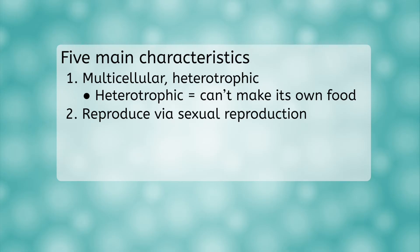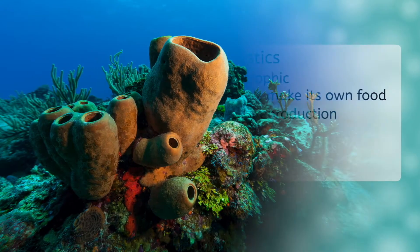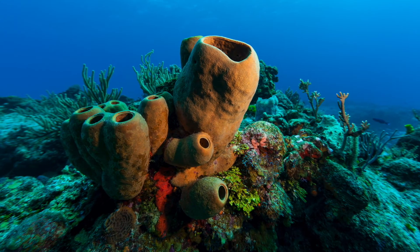Two, animals typically reproduce via sexual reproduction. Three, animal cells do not have cell walls. Four, animals have an internal digestive system. And finally, five, animals have the ability to move. Even if you don't see them moving, they do move. Sponges move across the seafloor at a rate of a few millimeters a day.